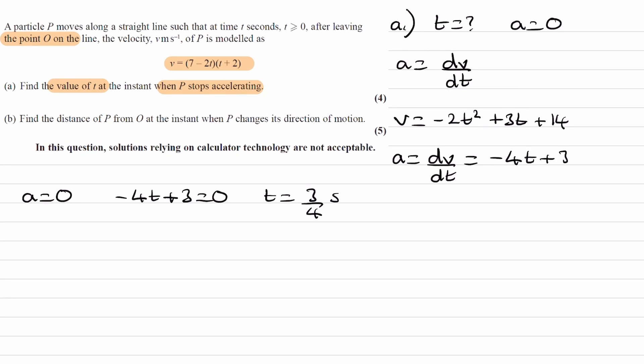And then for part B, find the distance of p from O at the instant when p changes its direction of motion. Let's draw out a velocity time graph for this scenario, and then it will be easy to think about how we can work this out.